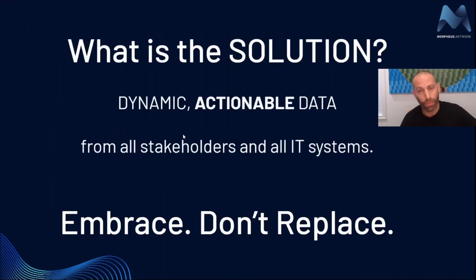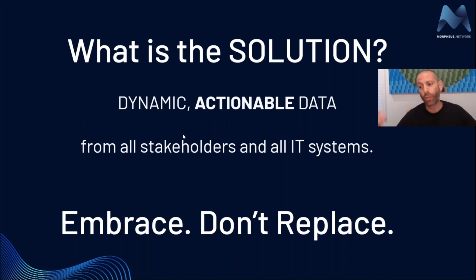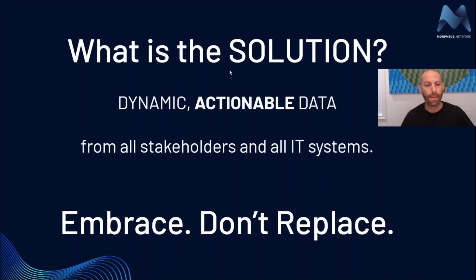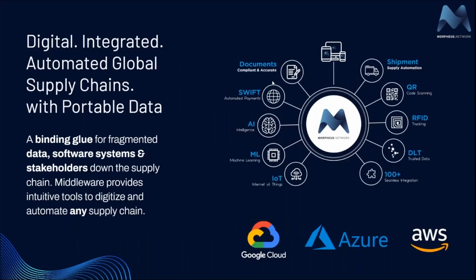So what is the solution? It's dynamic, actionable data — connecting all stakeholders and all IT systems. We have the data out there; we just need to take advantage of it, create automation, and optimize supply chains. We embrace the data we have; we don't have to replace it. What we do with Morpheus is act as middleware — we're the binding glue for fragmented data in the supply chain, as well as fragmented stakeholders all the way down the supply chain.